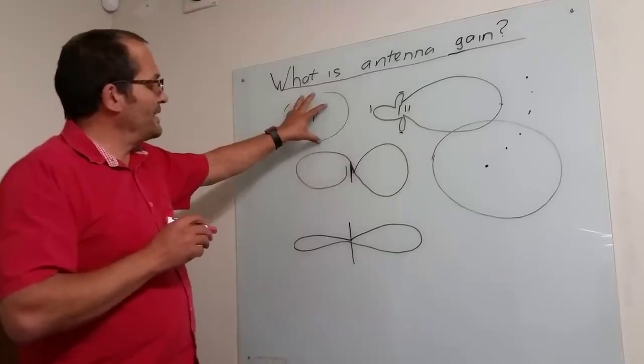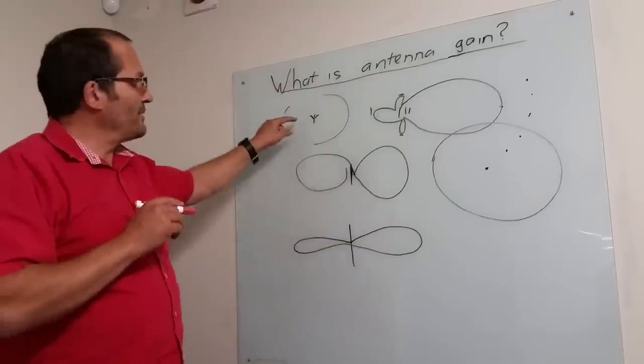But firstly, if a thing radiated in all directions, three-dimensionally like a balloon, that would be what's known as isotropic.